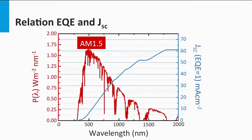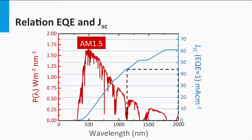In this graph, the spectral power density is shown in red. The blue line represents the theoretical short circuit current density at wavelength lambda. It shows that up to a wavelength of 2000 nm, we could theoretically generate a short circuit current density of 62 mA per square centimeter. For crystalline silicon having a band gap of 1.12 eV, which equals a wavelength of 1107 nm, we arrive at the theoretical current density of 44 mA per square centimeter.